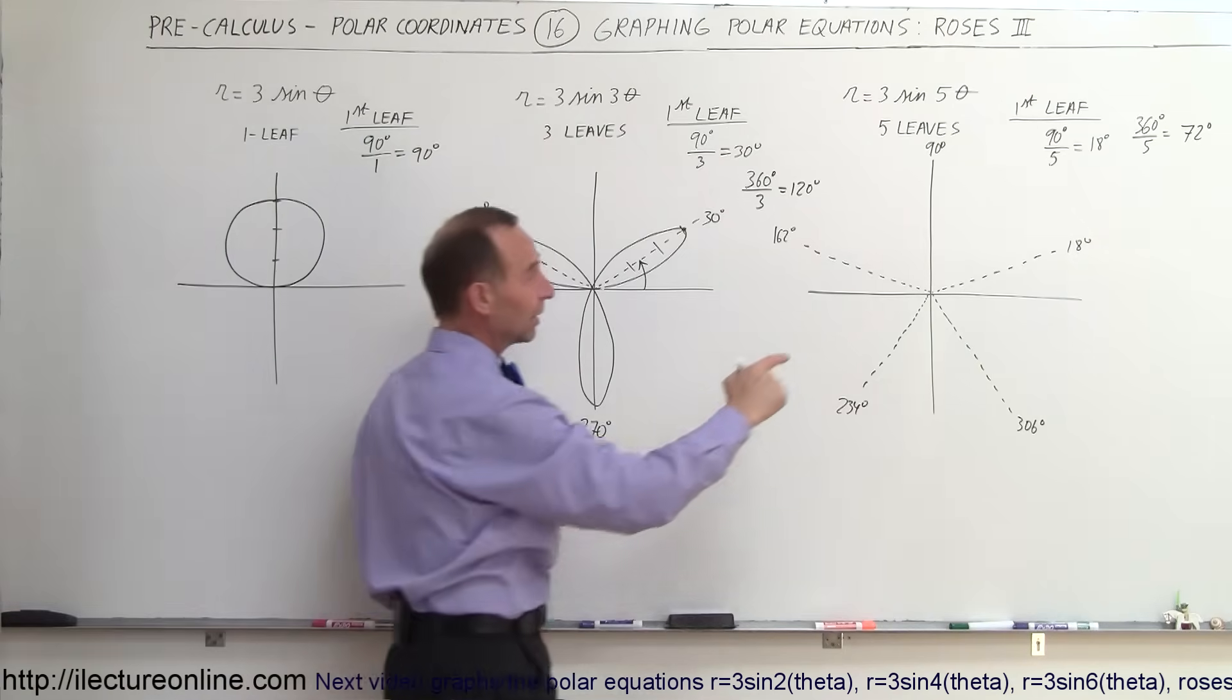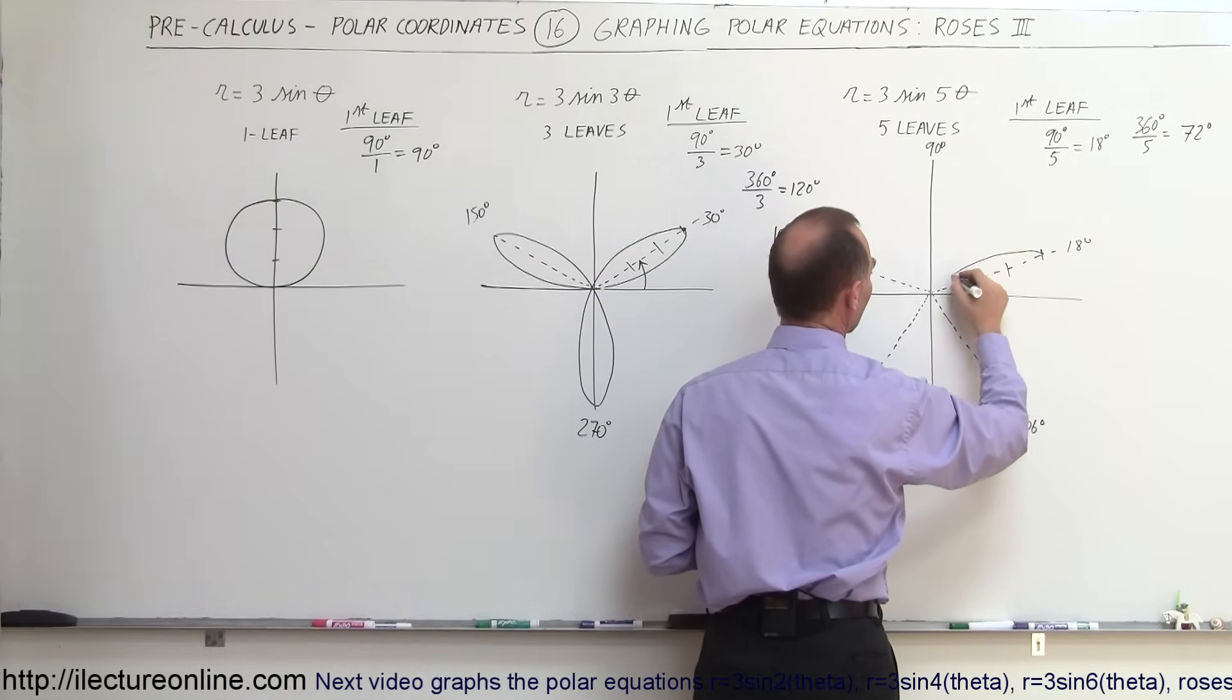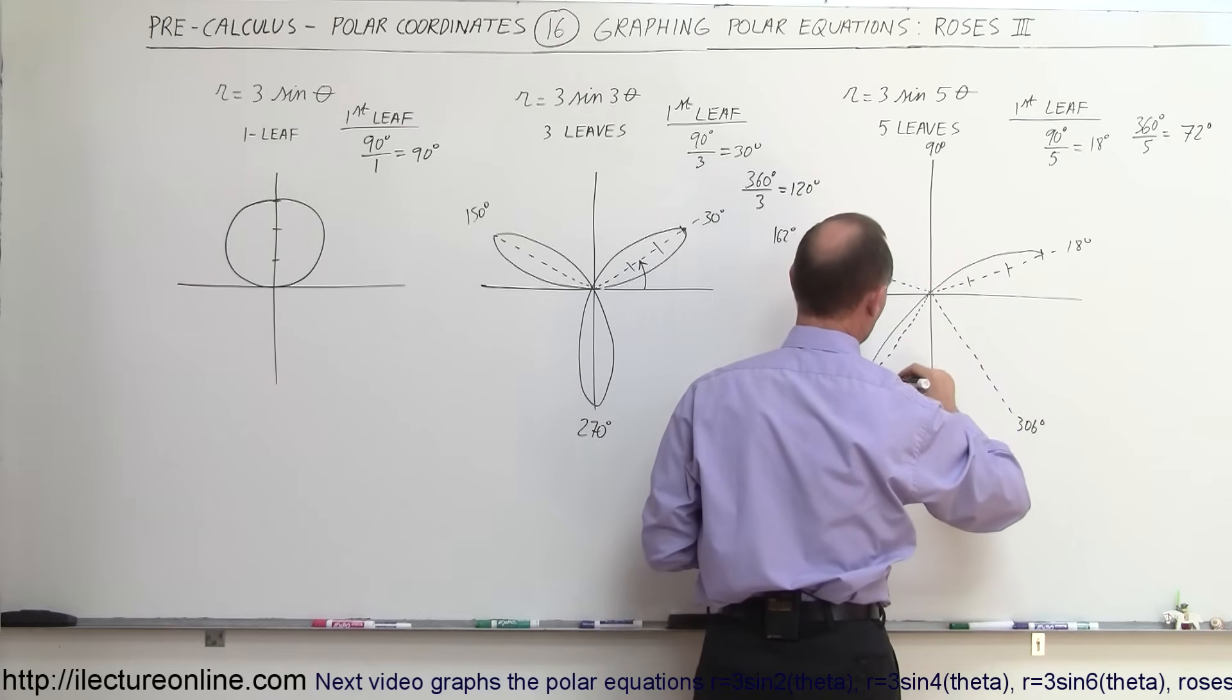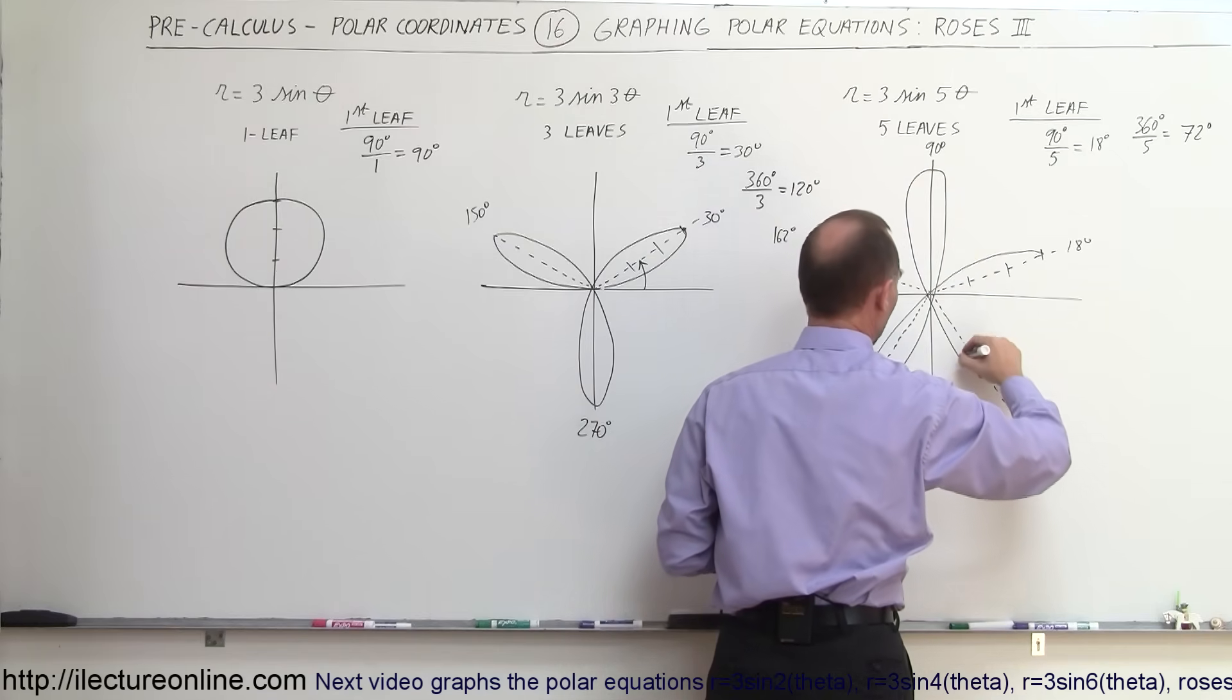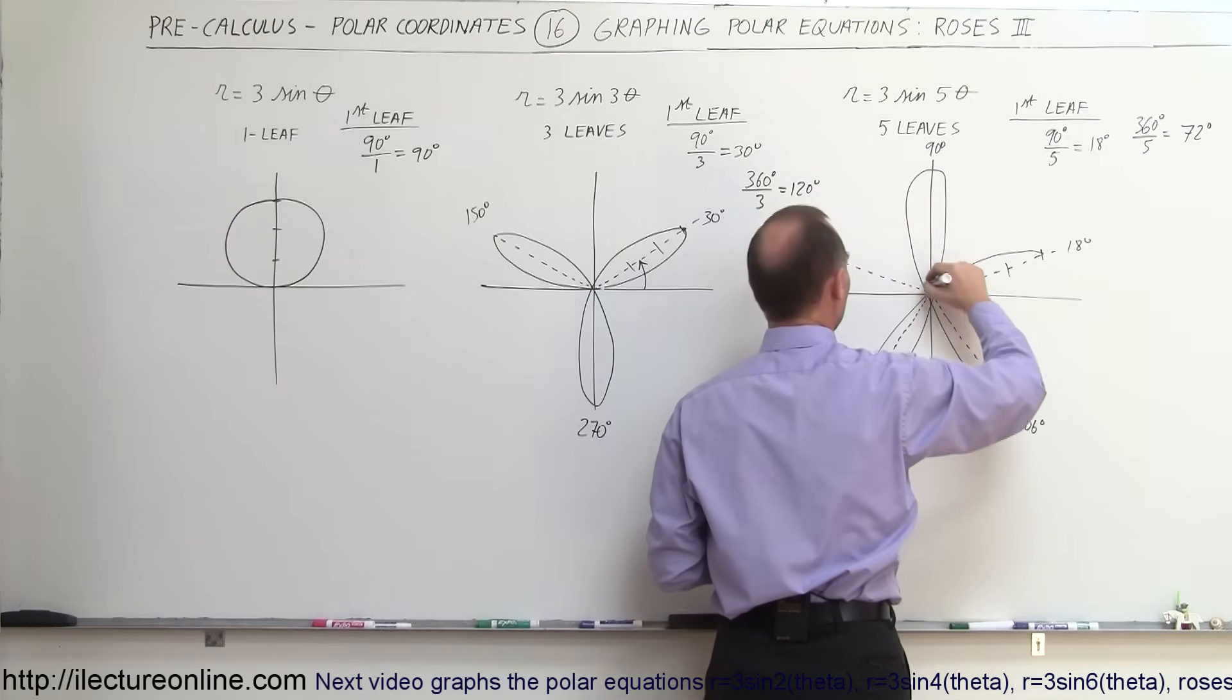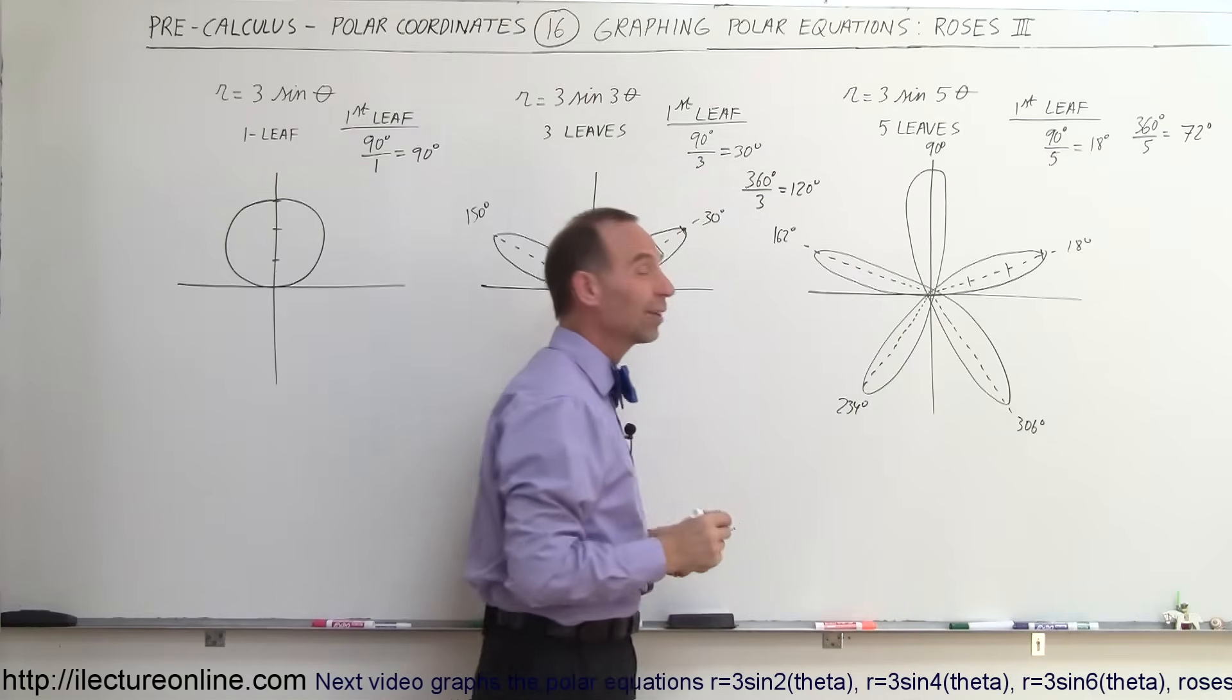For the 5-leaf, remember we start at 18 degrees. 1, 2, 3 units. So we go like this, then we come this way, then we come this way, and this way, this way, and finally we complete this one right there. And there's your 5-leaf rose.